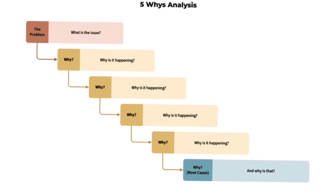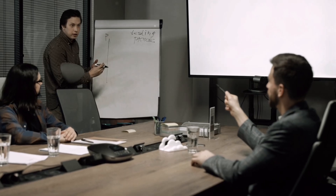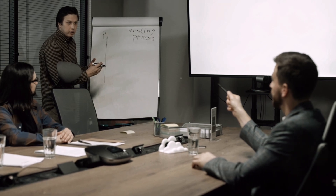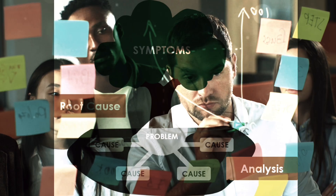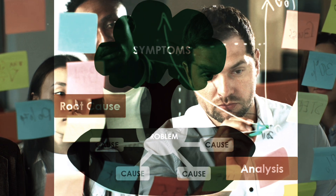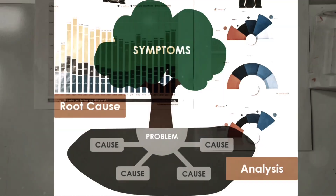By the 5th why, the root cause of the problem should be clear. It might be necessary to go beyond 5 questions or stop earlier if the root cause becomes obvious. Once the root cause is identified, the next step is to implement corrective actions to prevent the problem from recurring.